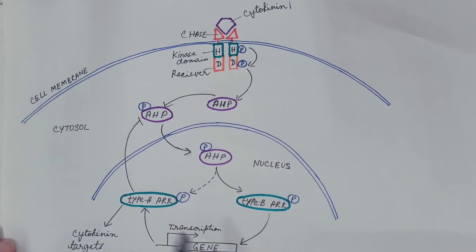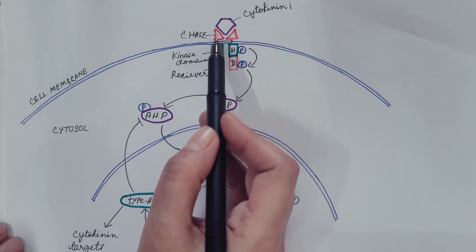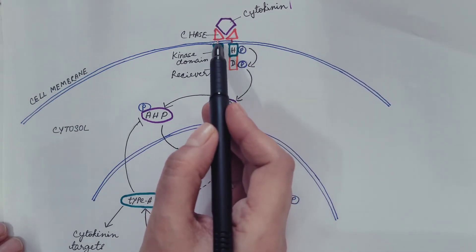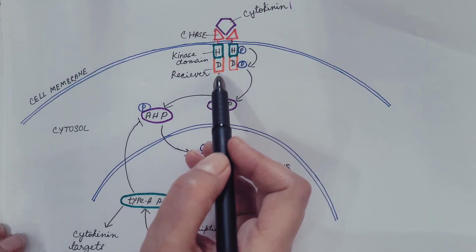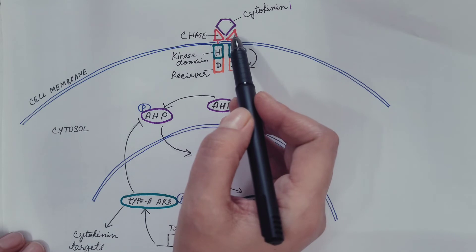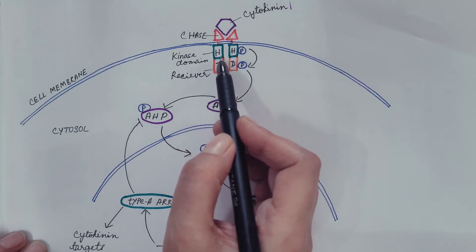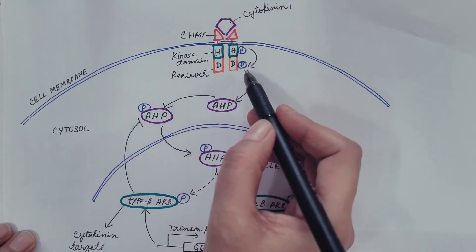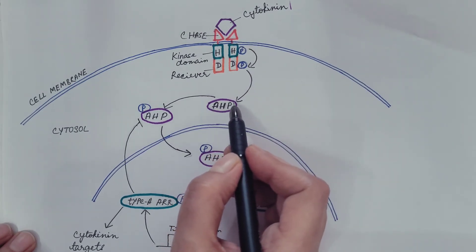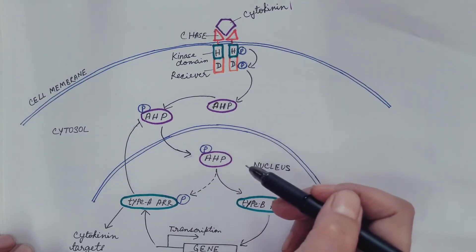Now let us understand cytokinin signaling with the help of this diagram. This is the HK cytokinin receptor, which has an extracytosolic region known as the CHASE domain that binds with cytokinin. A transmembrane region is present, and also a cytosolic region consisting of the kinase domain and the receiver domain. Cytokinin comes and binds with the CHASE domain, which activates dimerization of the receptor and leads to autophosphorylation of the histidine residue in the kinase domain, followed by phosphorylation of the aspartate residue in the receiver domain. Subsequently, this phosphate group is transferred to AHP — the histidine phosphotransfer protein — which acts as the signaling shuttle between the cytosol and the nucleus.